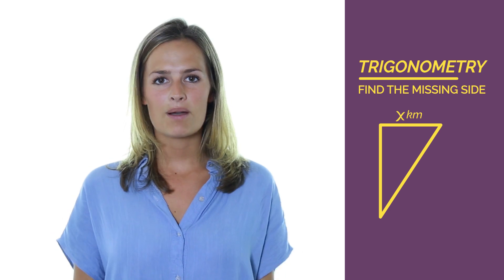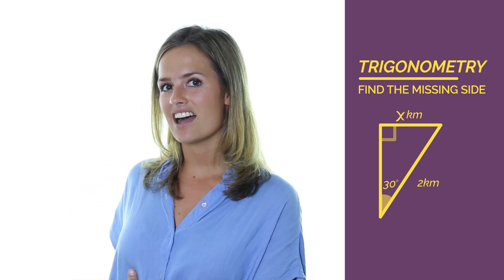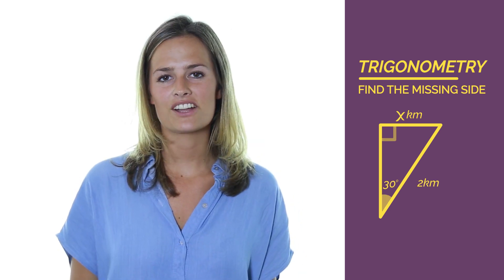In this video, we're going to use trigonometry to find a missing side when we know an angle and another side. So we have a triangle like this.